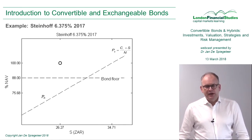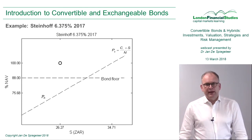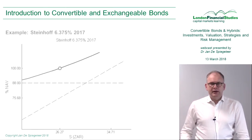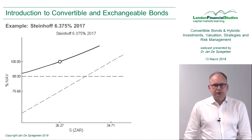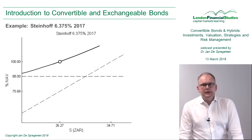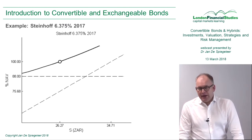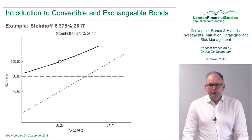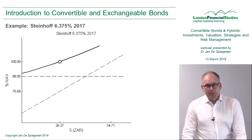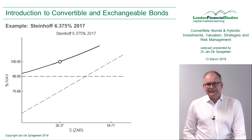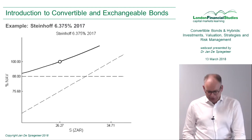Bond floor and parity line constitute two boundary levels, and I know that my real price curve has to be above them. This is what you do in a valuation model for convertible bonds — you're trying to figure out this line. The black line shown is a theoretical price curve that gives you theoretical movements of the convertible bond price for changing share prices, in this case for Steinhoff. Building a model is exactly trying to model this black line.